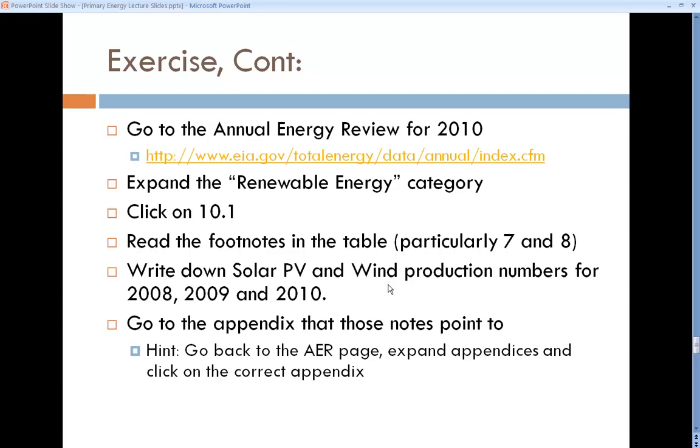Those footnotes, particularly the ones that address solar PV and wind, they say the same thing I've been saying, but in the way that they mean. While you've got that window open, write down the solar PV and wind production numbers for the last three years shown there: 2008, 2009, 2010. In those footnotes, these seven and eight footnotes, it refers to an appendix that talks about where you'll find the heat rate. I'm not going to tell you what that is, you've got to read it. Pretty easy to do. Then go to that appendix.